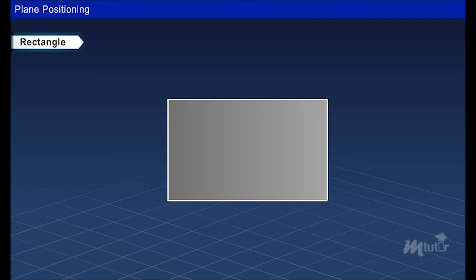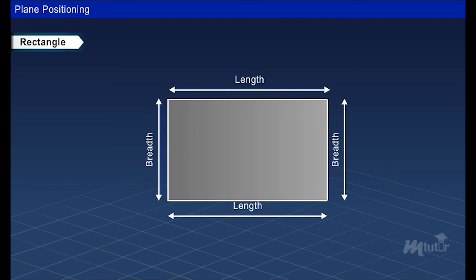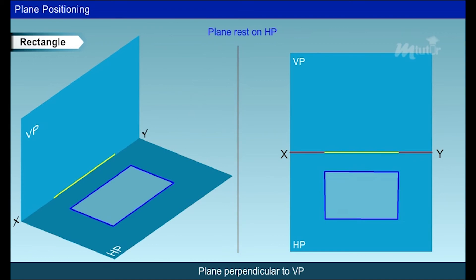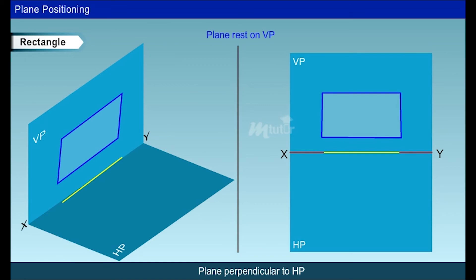A rectangle has four sides with two longer and two shorter sides of equal length. If the rectangular lamina rests on the HP and is perpendicular to VP, it can be drawn as shown. If the rectangular lamina rests on the VP and is perpendicular to HP, the diagram will be drawn as shown.